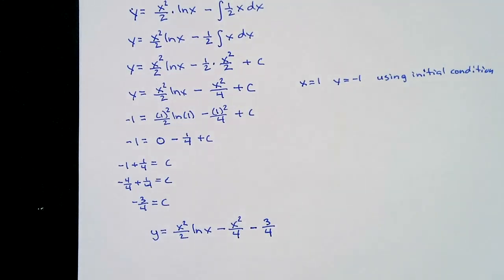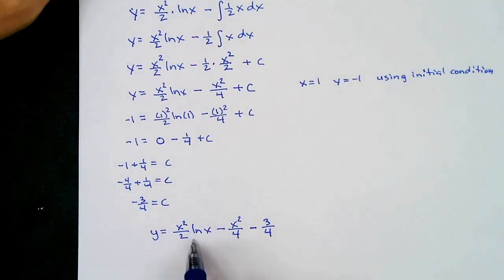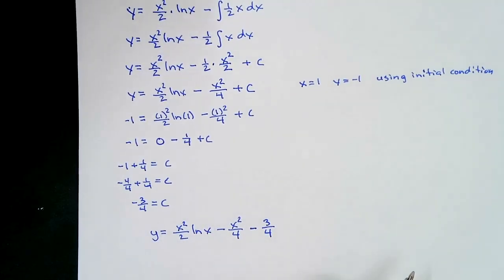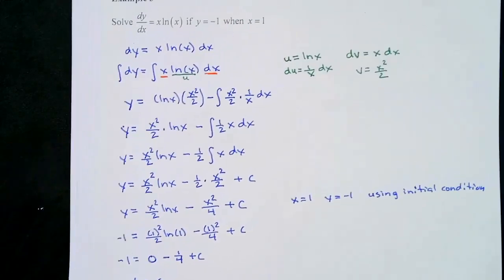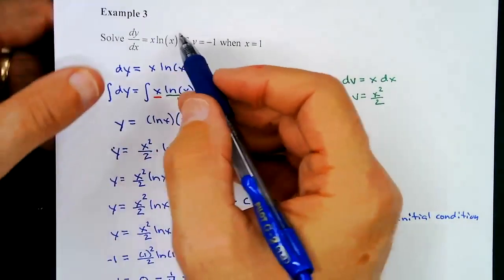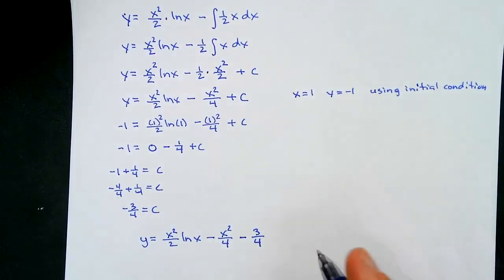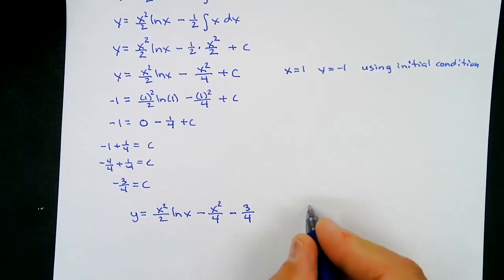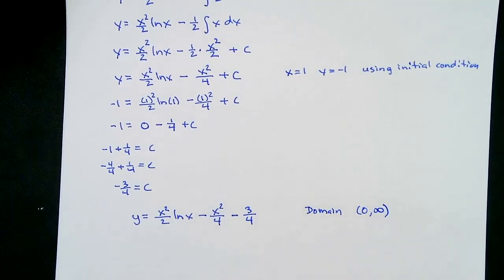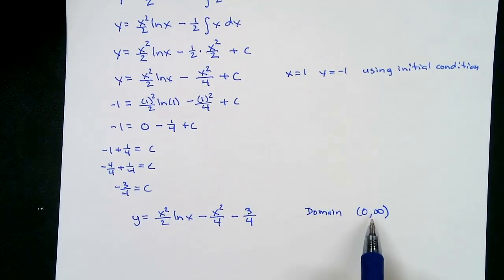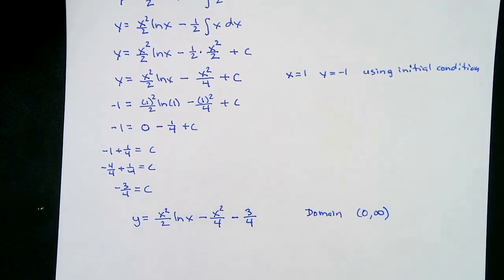This particular question didn't ask for it, but regarding the domain: ln(x) requires x to be positive, and the original differential equation also has ln(x), so x must be greater than zero. The domain is (0, ∞). Sometimes they'll ask for the domain of the function that gave the differential equation.